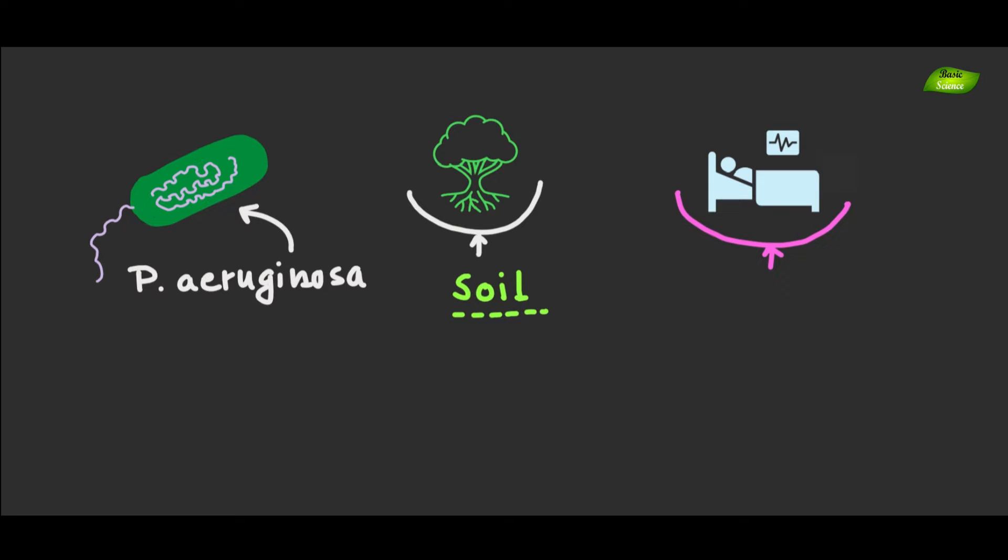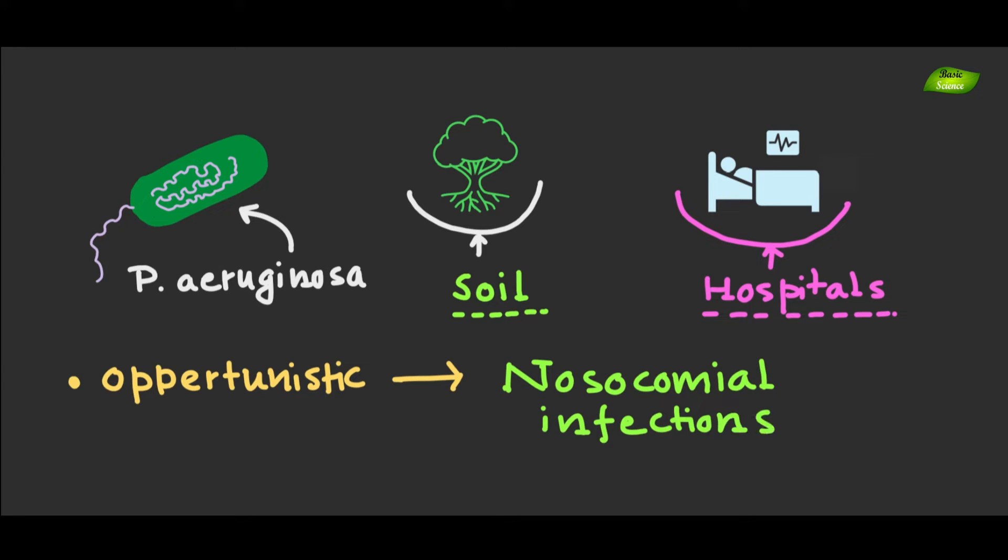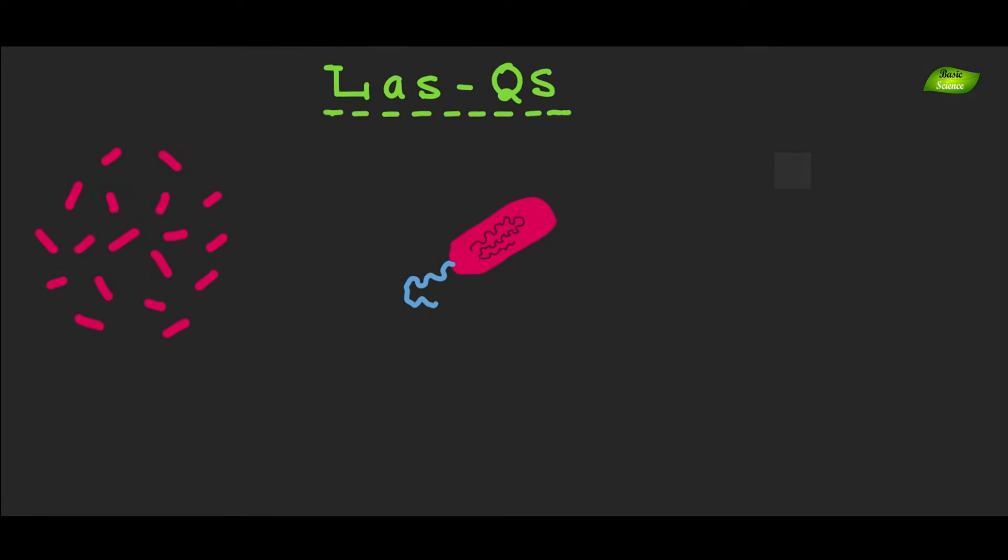Pseudomonas aeruginosa, a versatile bacterium, thrives in diverse environments from soil to hospital settings, showcasing its adaptability and resilience. Known for its opportunistic nature, Pseudomonas aeruginosa poses a significant threat as a leading cause of nosocomial infections. Now, first let's understand what exactly is quorum sensing.